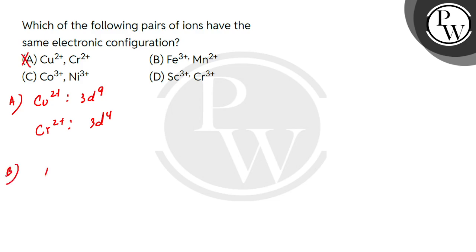Option B: Fe³⁺. Iron is 3d⁶ 4s². If we remove three electrons, it will be 3d⁵. Manganese is 3d⁵ 4s². If we remove two electrons from Mn, it will be 3d⁵ configuration. So option B has the same electronic configuration.